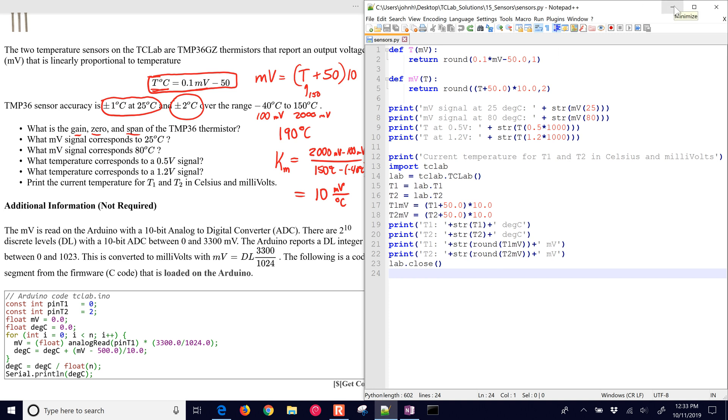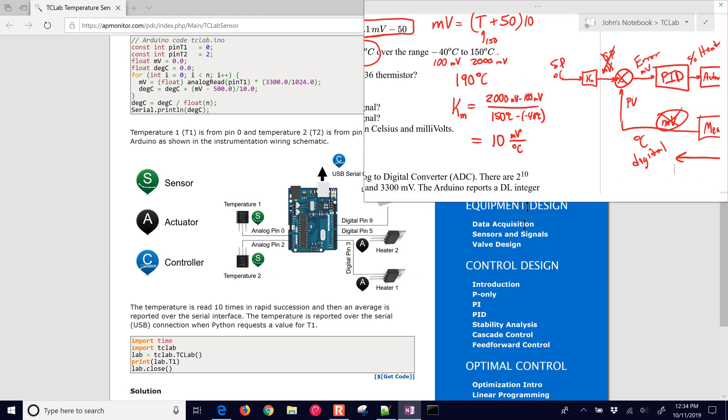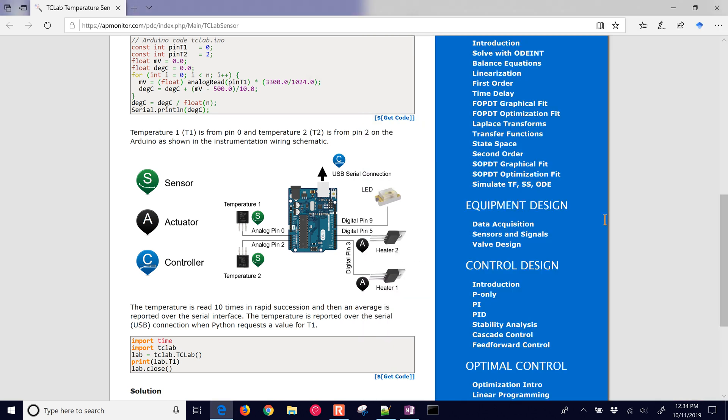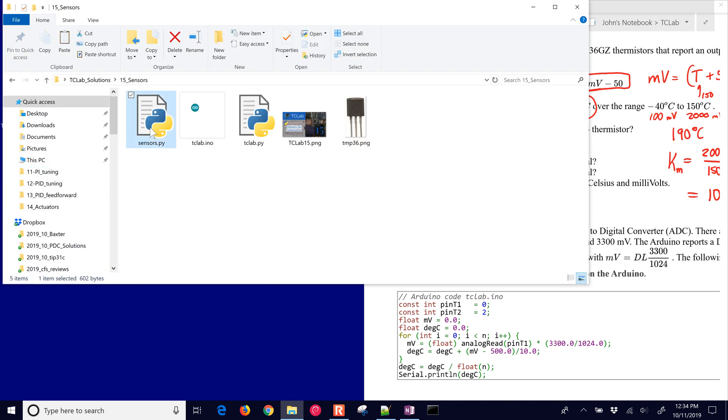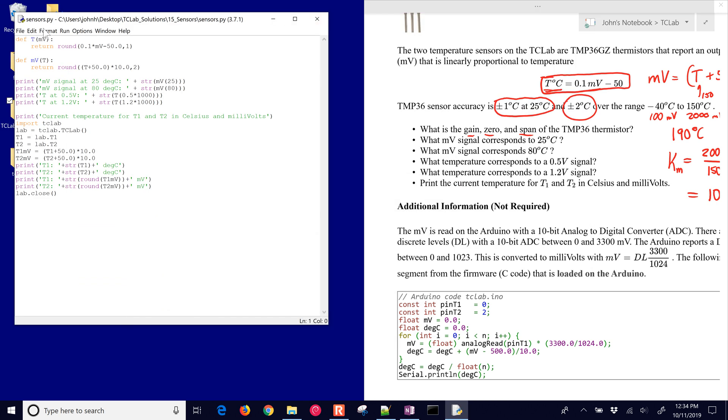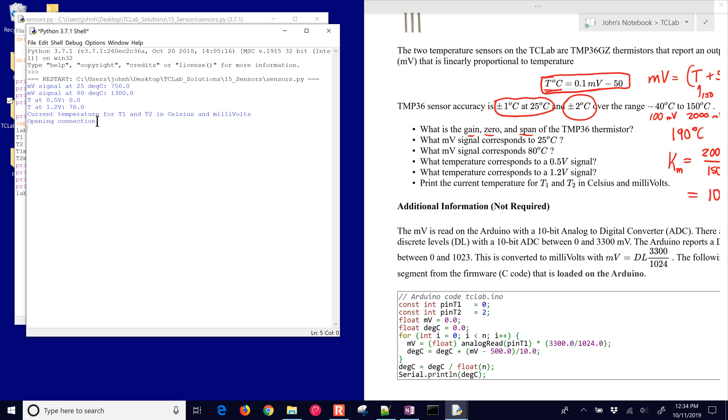So let's run this and just get our current values. I'll put this over here just so we can keep the questions up. And let's see if this script will help us answer our questions. It's opening a connection, and we have some of the answers here. Here's the millivolts signal at 25, it's 750 millivolts. At 80 degrees, it's 1,300. And then the temperature at 0.5 volts is going to be 0 degrees Celsius. And the temperature at 1.2 volts is going to be 70 degrees Celsius. And right now, the temperature at 1 is 18 degrees Celsius, which is 680 millivolts. And temperature at 2 is 18.32 degrees Celsius, with 683 millivolts.